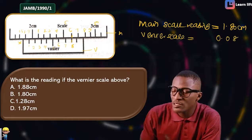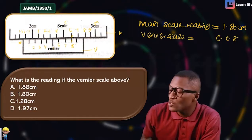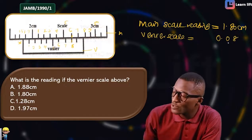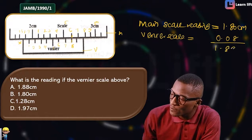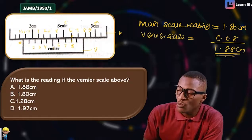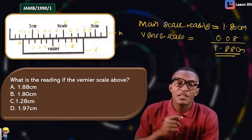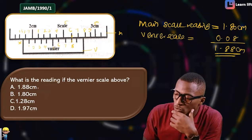So the vernier scale gives 0.08, and the main scale gives 1.8. Adding them together: 1.8 + 0.08 = 1.88 cm. That is the reading — 1.88 cm, which matches option A.